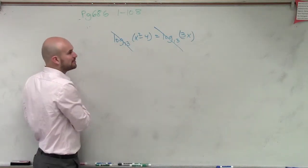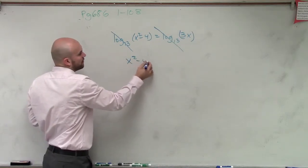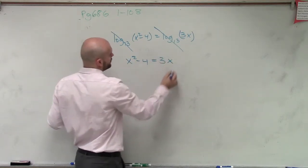So therefore, we're not really concerned about log base 13. We just know that x squared minus 4 now has to equal 3x.